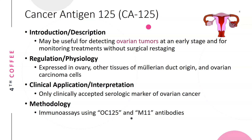CA125, or cancer antigen 125 (also called carbohydrate antigen 125), may be useful for detection of ovarian tumors at an early stage or for monitoring treatment without surgical restaging. CA125 is expressed in ovarian and other tissues of Müllerian duct origin, and in ovarian carcinoma cells. It is the only clinically accepted serologic marker for ovarian cancer. The methodology uses immunoassays with the OC125 and M11 antibodies.